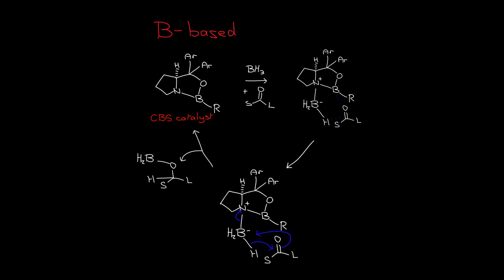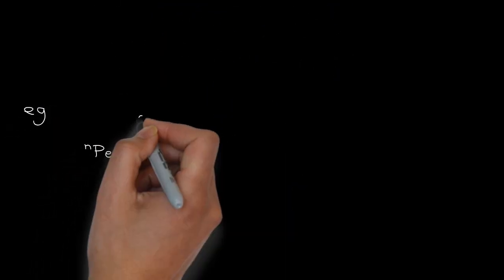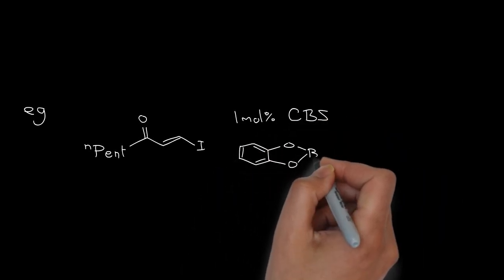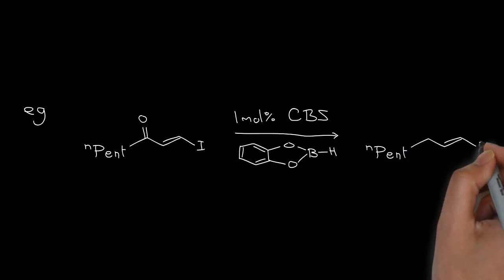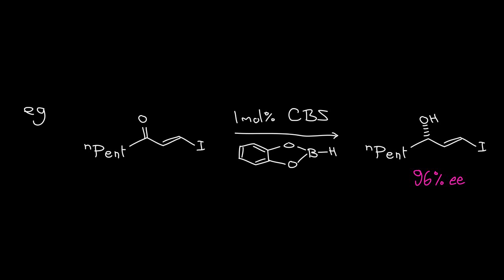The borane reducing agent doesn't have to be BH3. If it's catechol borane, for instance, a less reactive source of BH, then the reaction can become chemoselective. In the same way that the Noyori catalyst is, only the carbonyl is reduced and not the alkene or indeed the vinyl iodide in this particular reaction.